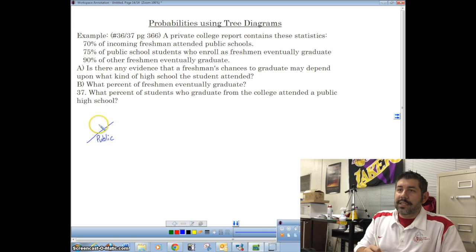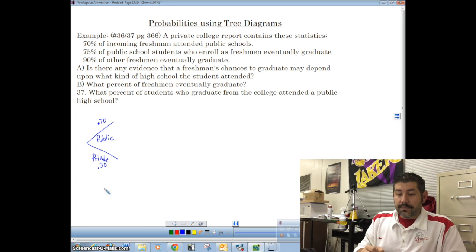I can either come from a public school. I should probably use something other than PS, right? Okay, let's say public. Now, if we came from a public school, that's 70%, so that's 0.7. Private school students made up 30% of freshmen. Now, from there, I could have what percent of these end up graduating?